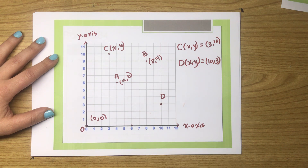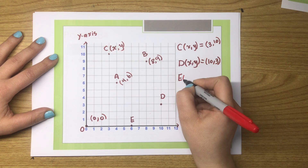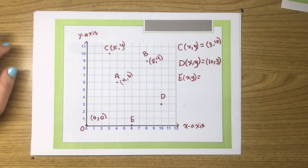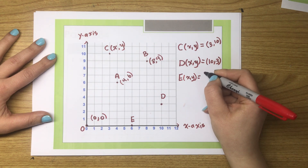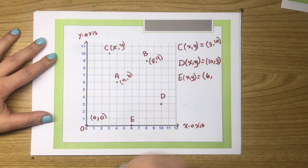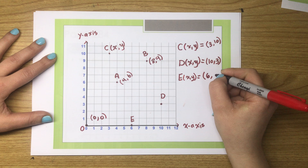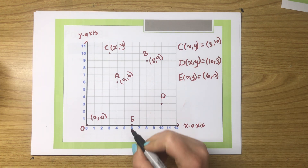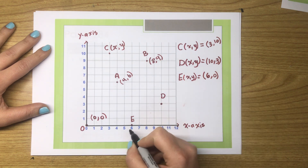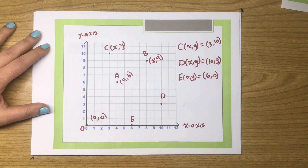Let's try another interesting one. What are the coordinates of point E? Point E is on x equals six. What about y? It meets at zero. So the coordinates of point E are six, zero.